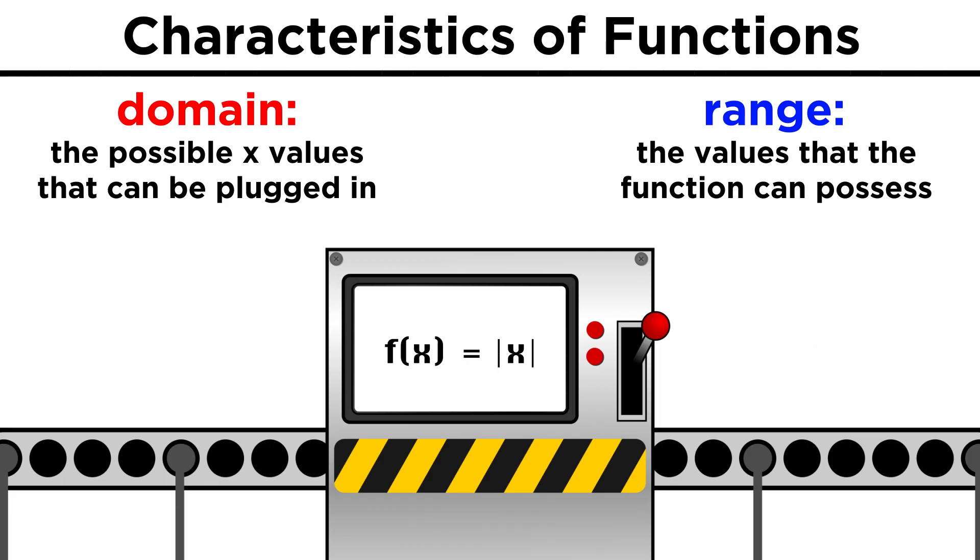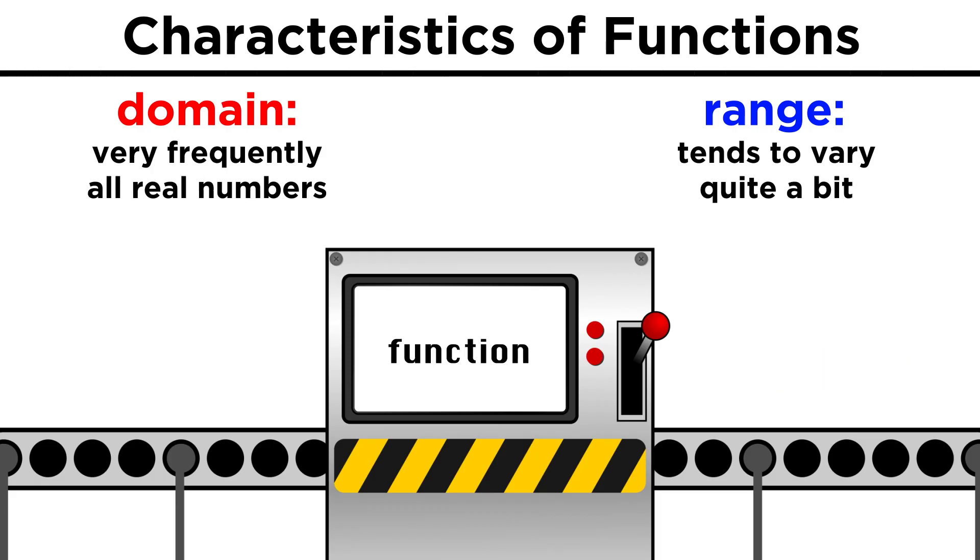But if we have something like f of x equals the absolute value of x, then the range is now limited to values greater than or equal to zero. So while the domain is very frequently all real numbers, the range has a tendency to vary quite a bit depending on the type of function we are looking at.